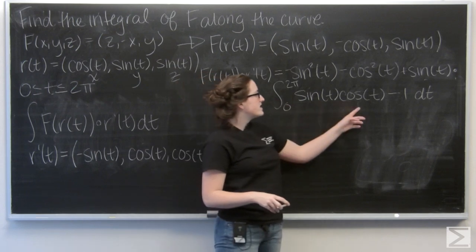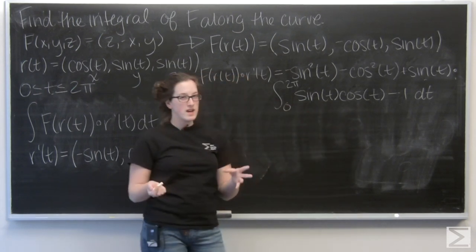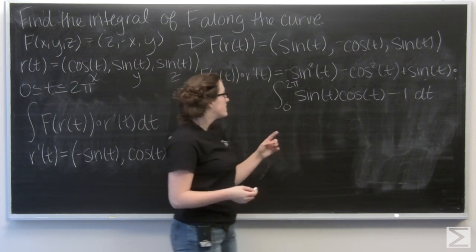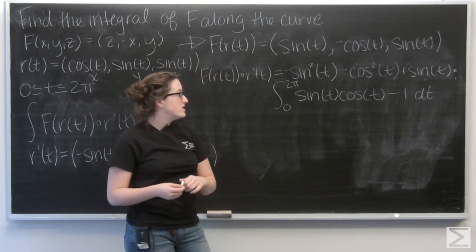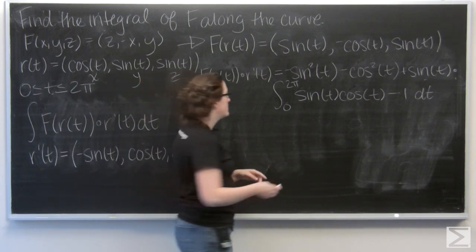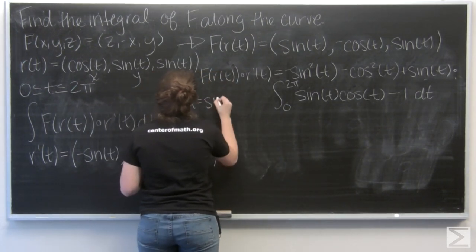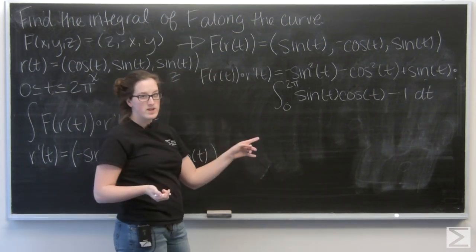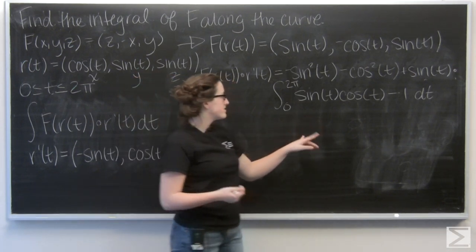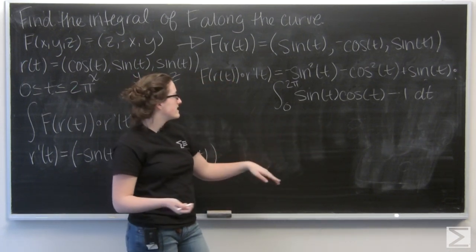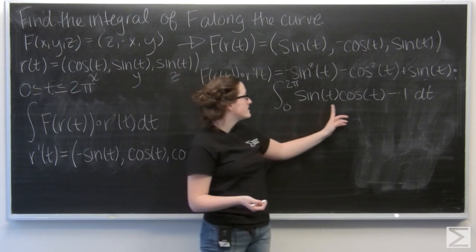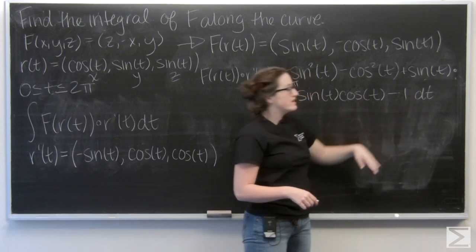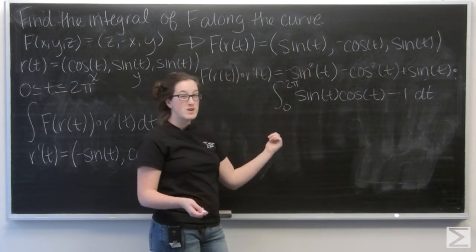So for sine of t cosine of t, I'm going to have to do something. And I'm going to use a u substitution. And I'm going to set u equal to sine of t. Oh, first off, let me go ahead and separate this integral into two different pieces. By linearity, I can say that the integral of sine of t cosine of t minus the integral of 1 is the same as this. So let me go ahead and rewrite that.